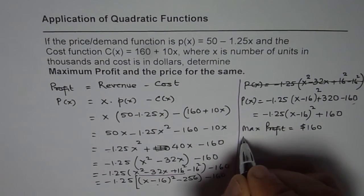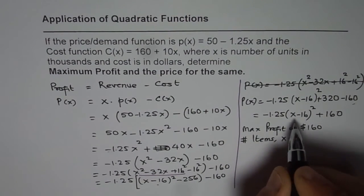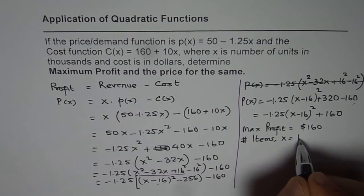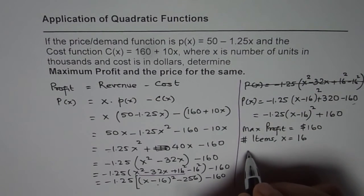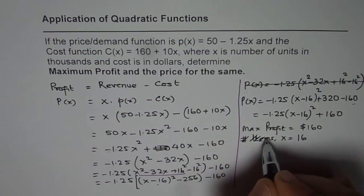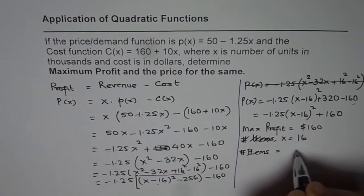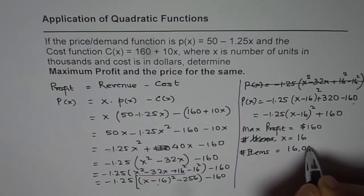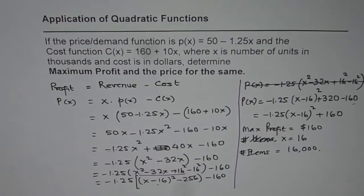And the number of items, number of items, that is the x value, is x equals to 16. And in our case, we will say x equals to 16 means the items are, let me write x value here first. And then we say number of items is equals to 16,000, since x is number of units in thousands.